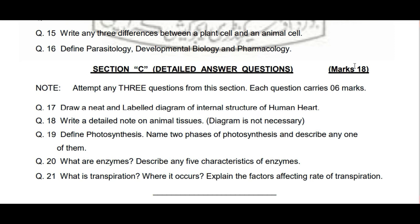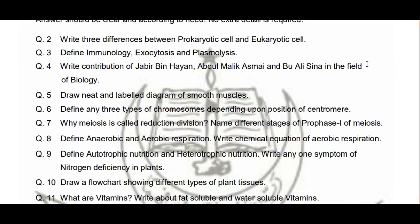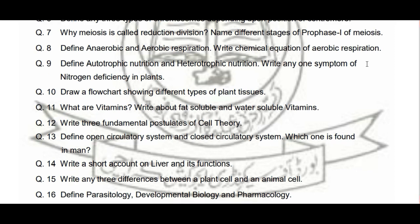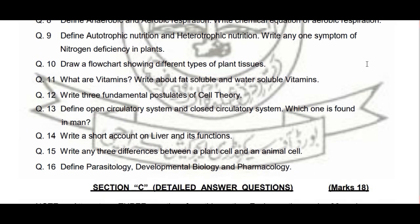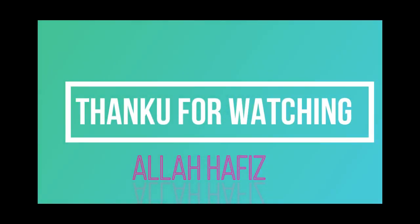Last question hai: 'What is transpiration? Where does it occur? Explain the factors affecting rate of transpiration.' Transpiration kya hai, kahan hoti hai, aur kaunse factors rate of transpiration ko affect karte hain. Bohat easy model paper banaya gaya hai. Agar aap is poore model paper ko achhe se yaad kar lete hain aur samaj lete hain toh aapka 30 se 40 percent paper isi model paper mein se aayega. Best of luck to all students, and thank you for watching. Allah Hafiz.